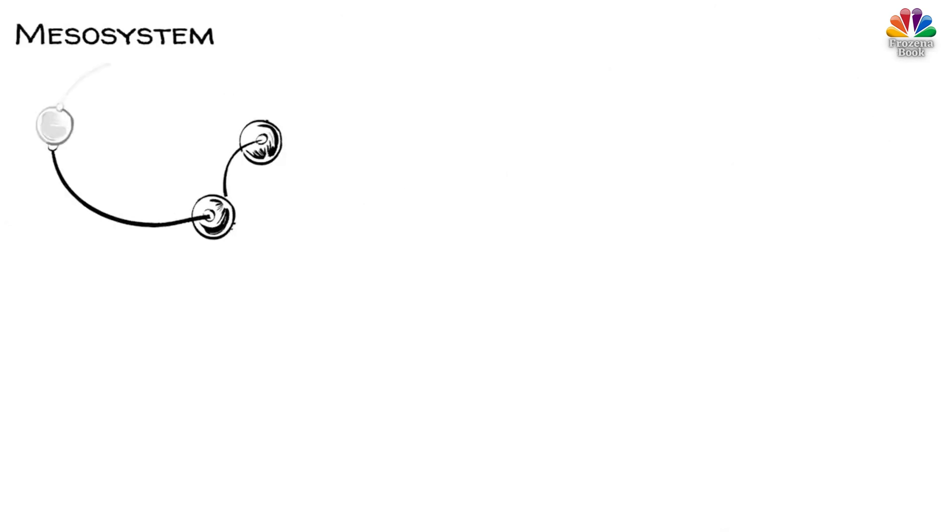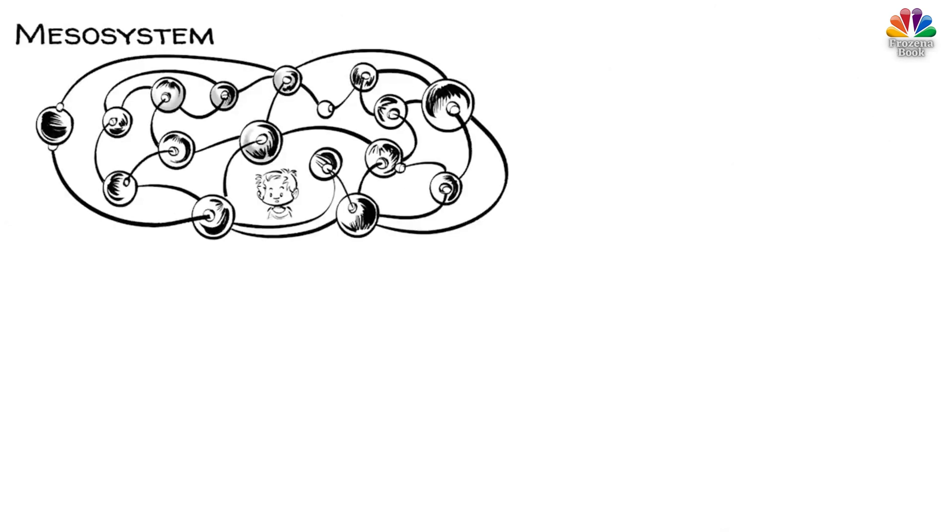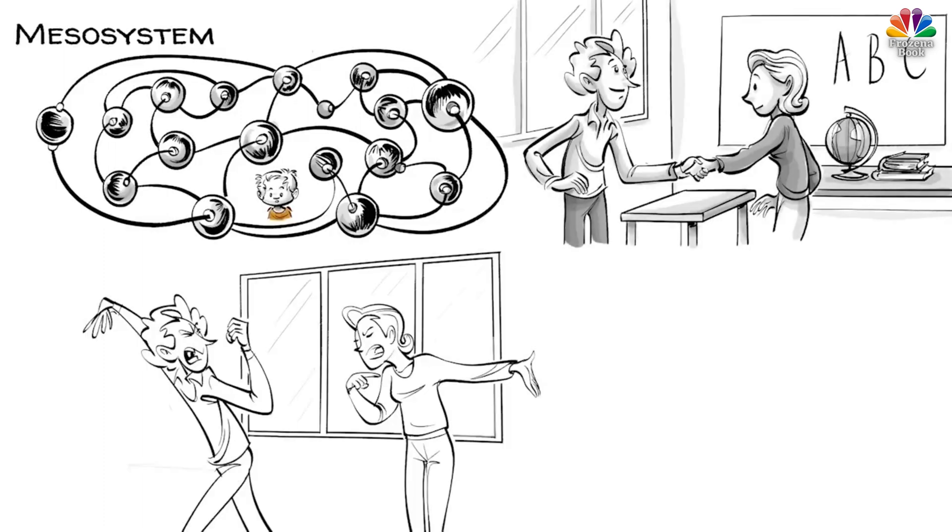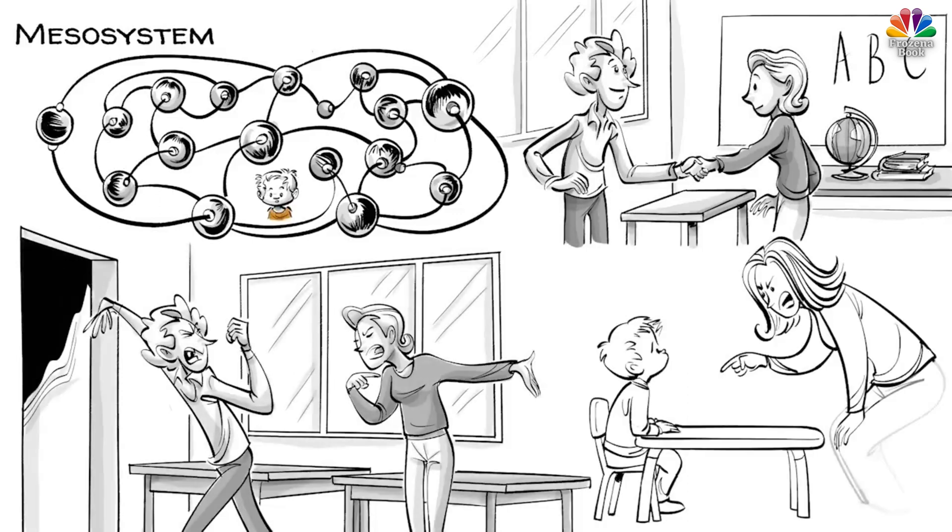The mesosystem represents the interconnections between the elements that surround the child. For example, the relationship between the father and the schoolteachers. If the father doesn't get along with a teacher, the child might suffer.